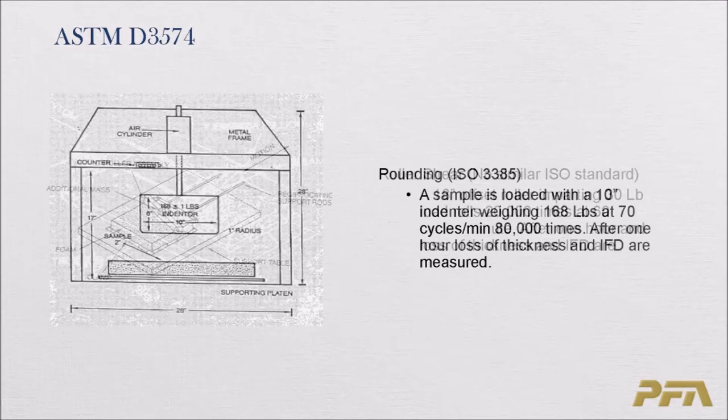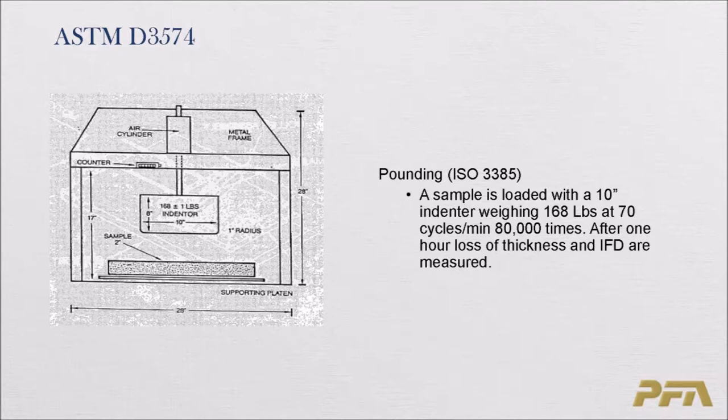The most common fatigue test is pounding, also referred to as isopounding. A 10-inch indenter weighing 168 pounds is dropped on a piece of foam 80,000 times at a rate of 70 cycles per minute. After one hour of recovery, the loss of thickness and IFD are measured.